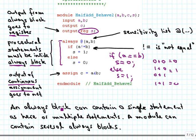An always block can contain a single statement — the if-else counts as a single statement — or it could have multiple statements. The module can also contain several always blocks; I could have had another always block with sensitivity on something else and some procedure in there, or I could have tried to put everything into one always block. That depends on how you want to structure your programs and how readable you want to make them.